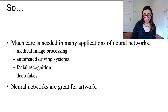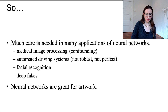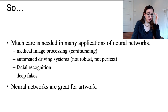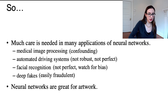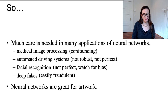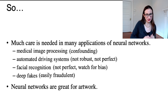Much care is needed in applications of neural networks, particularly for computer vision. Examples include medical image processing where confounding occurs, automated driving systems that are not robust or perfect, facial recognition systems that are imperfect and exhibit racial bias, and deepfakes that are easily fraudulent and can cause serious problems for society — especially when people don't care what the truth actually is. On the other hand, neural networks are really great for artwork.